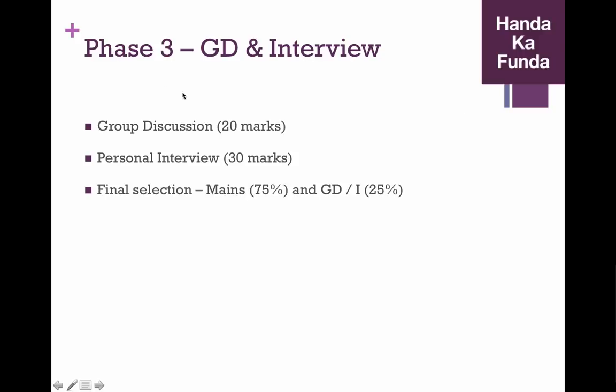Moving on, the phase 3, the group discussion and the interview stage. Group discussion will be for 20 marks and the personal interview stage will be for 30 marks. And whatever you score here, that will be used in your final selection process. Please note, in the final selection, the only thing that matters is your score in mains and your score in the GD and the interview round.